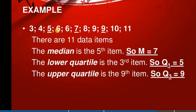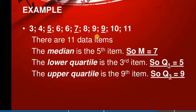Here you can see there are 11 data items. The median is the fifth item — this is the lower quartile region — and the middle item is Q2, that is the median. Q1 is the 3rd item (value 5) and Q3 is the 75 percentage, meaning the ninth item. Q3 is the ninth item.